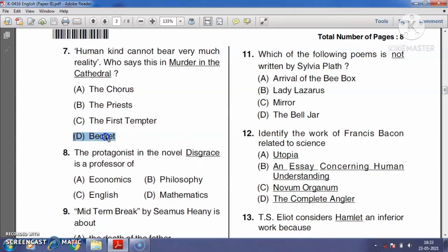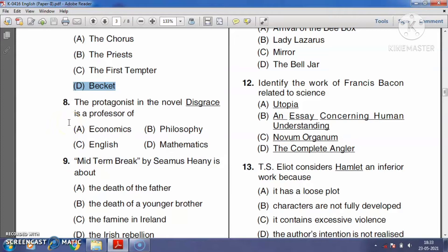Question number eight: The protagonist in the novel Disgrace is a professor of economics, philosophy, English, or mathematics? Disgrace is a novel by J.M. Coetzee, published in 1999. It won the Booker Prize, and the writer also received the Nobel Prize in Literature. David Lurie is the protagonist in the novel who is a professor of English, so the right answer is option C, English.